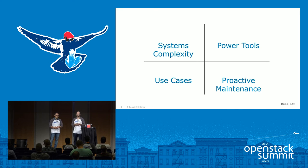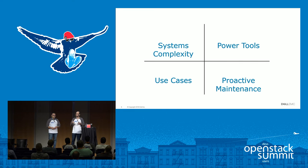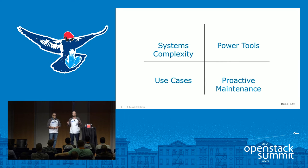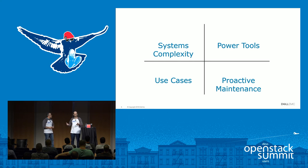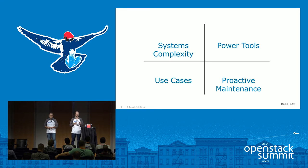Today we'd like to walk you through four areas that we believe would improve those three challenges. Number one: systems complexity and understanding of how systems work. Number two: having the proper power tools. Number three: use cases showing what we gain from new tools. And finally, proactive maintenance — together these form a solid foundation that will drive us to a better RCA.